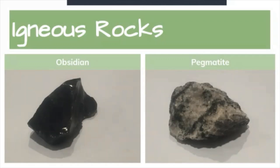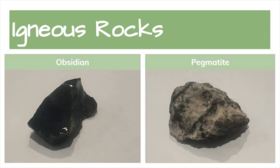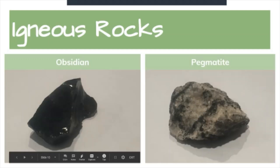Next we have obsidian and pegmatite. Obsidian is easy to spot because it's smooth and glassy — an extrusive igneous rock usually black or very dark blackish green with minimal crystal growth. It's very hard but brittle, and it's often used for decoration and jewelry. Pegmatite is an intrusive igneous rock formed underground with large intertwined crystals of quartz, feldspar, and mica. Pegmatites are important because they often contain rare earth minerals and gemstones such as aquamarine, topaz, fluorite, apatite, and corundum.